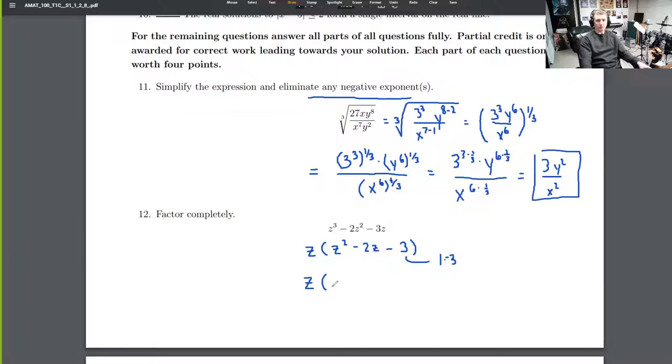So this factors to z times (z minus 3)(z plus 1). Here we could go back and check our work.